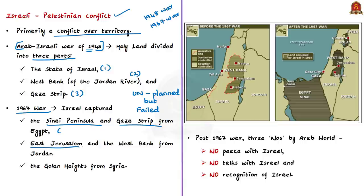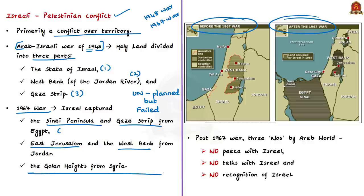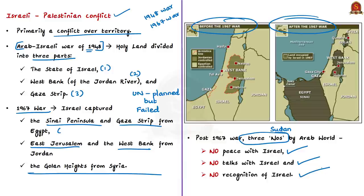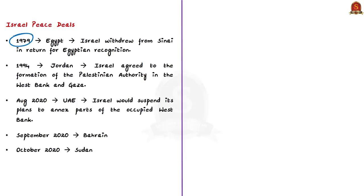After suffering defeat at the hands of Israel, Arab countries convened in Khartoum, the capital of Sudan, and declared the famous three no's: no peace with Israel, no talks with Israel, and no recognition of Israel. This is the background related to the Israel-Palestine conflict. At that point, Arab countries were all on one side and they supported the Palestinian cause.